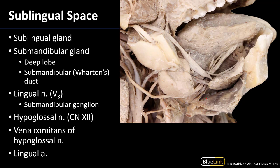Here is a lateral view of the sublingual space. The tongue is visible and the mucosa has been removed from its side so we can see the musculature. Here is just a little bit of the mandible — most of it has been carved away for reference. The first notable structure is the sublingual gland, which occupies quite a large portion of the sublingual space flanking the genioglossus muscle.